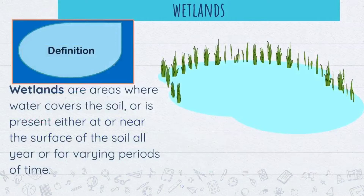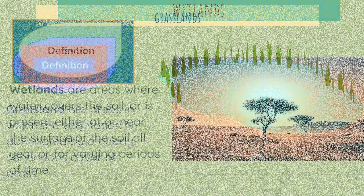Next up, wetlands. Wetlands are areas where water covers the soil, or is present either at or near the surface of the soil, all year or for varying periods of time.